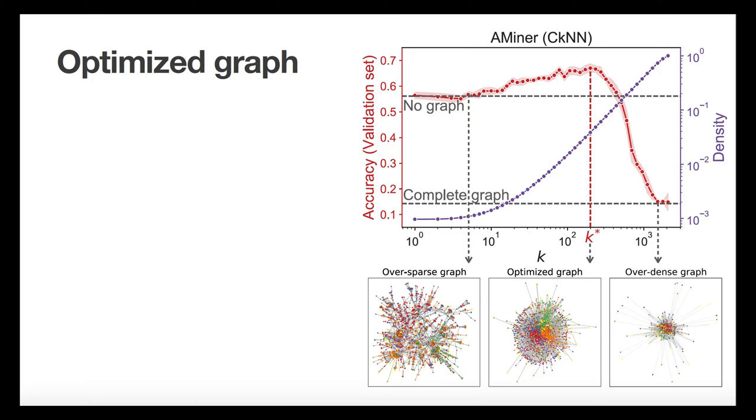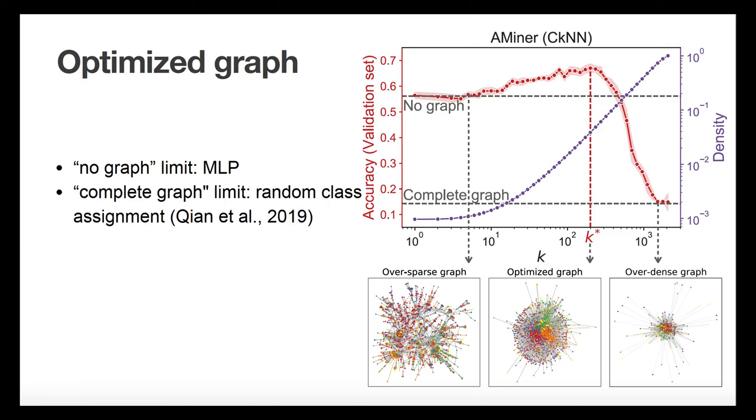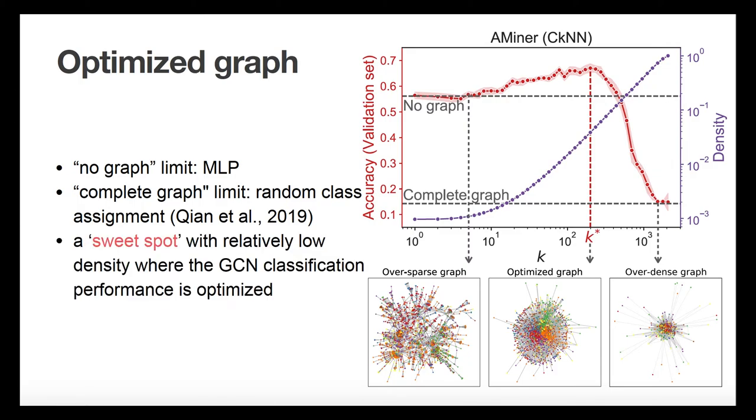Note that the two limiting cases are well characterized. The no graph limit corresponds to the multi-layer perceptron, for short MLP, and the complete graph limit is equivalent to the mean field and leads to a random class assignment. The figure shows the classification performance of GCN with a CKNN graph of increasing density applied to a dataset of computer science papers, which we used as our running example throughout. We find that there is a sweet spot in the density, neither over-sparse nor over-dense, where the GCN classification performance is optimized.